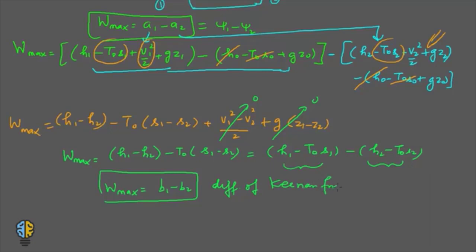This is how you can achieve the maximum work from a mass in steady flow entering a control volume. This completes the discussion of availability in a steady flow process. Now let's look at availability in a non-flow process.